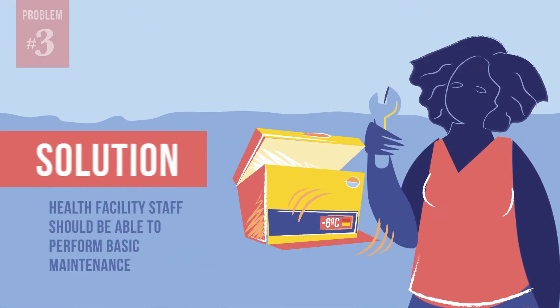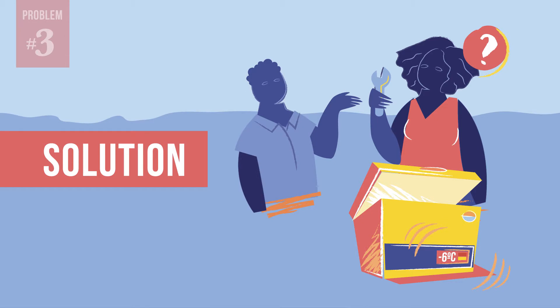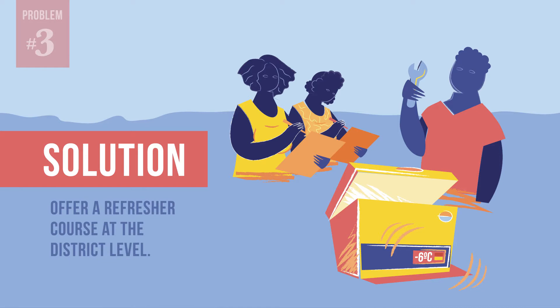It is also possible that power interruptions or poor quality kerosene are to blame. Sometimes staff at the health facility level can solve this problem. For example, health facility workers should be capable of doing basic maintenance and making sure the refrigerated temperature is set properly. If health facility staff does not know how to do these things, you have an opportunity to provide supportive supervision at the facility. Show them how to do basic maintenance. If you notice that several other health facilities are also recording a lot of temperature alarms, you may want to offer a practical refresher course at the district level.